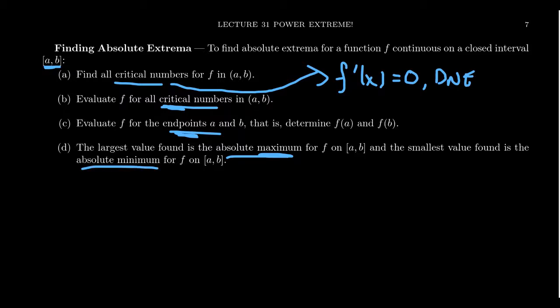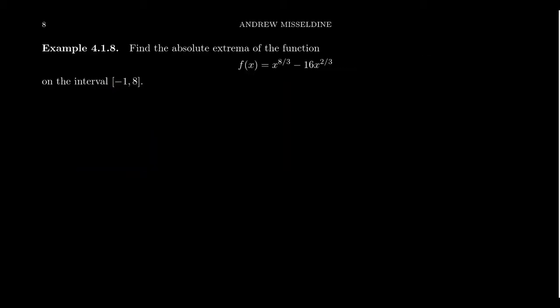Let's work through an example. Consider f(x) = x^(8/3) − 16x^(2/3) on the interval [−1, 8]. What are the absolute extrema? The Extreme Value Theorem guarantees a solution exists here since we have a continuous function on a closed interval. We need to identify which points to evaluate, so we start by computing the derivative.